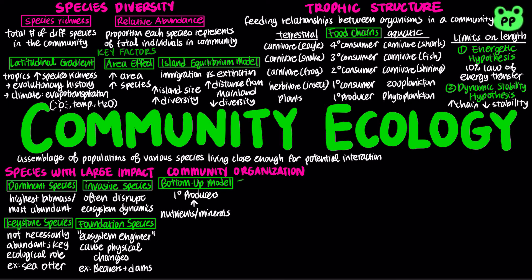On the other hand, the top-down model, also called the trophic cascade model, proposes that control comes from the trophic level above. For example, predators control herbivores, which in turn control primary producers.